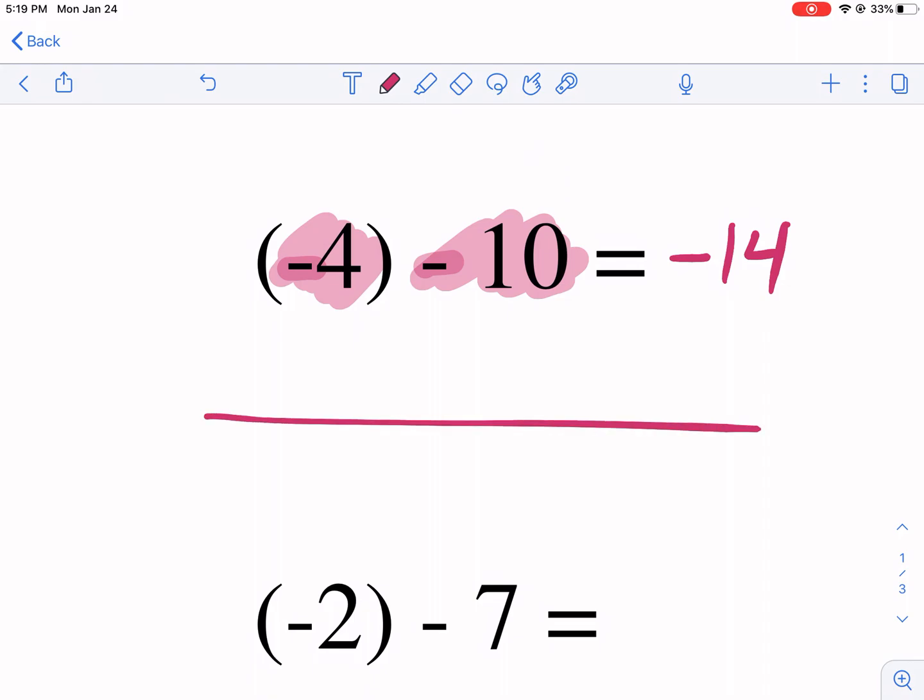Another way to think of it, number line, here's zero. There's negative four. We're going to go one, two, three, four, five, six, seven, eight, nine, 10 in the negative direction. And we land on negative 14.